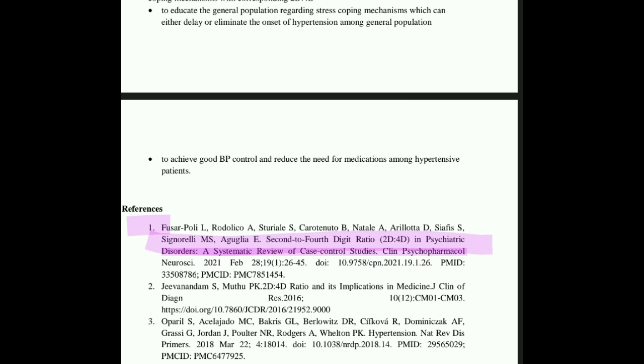First you have to write the author name. After that you have to write about the study. Look here — these are the authors, this is the study: 'Disorders, a systematic review' and so on. So, firstly you have to write the author name, after that you have to provide the link. Author name, study name, and then the link of the website.